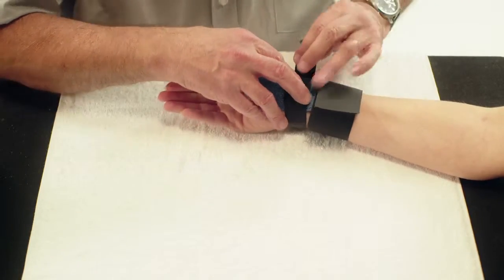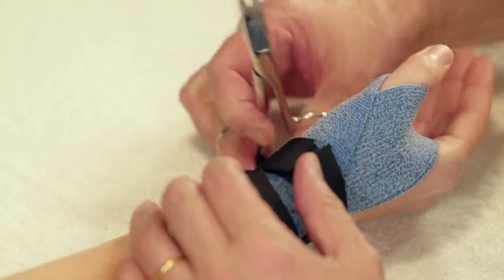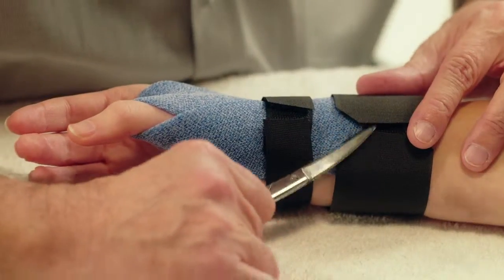A second strap of Velcro loop can be attached around the wrist. Cut away any excess Velcro loop and round the corners.